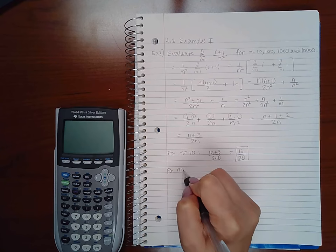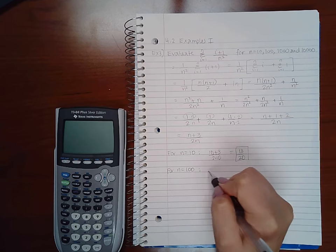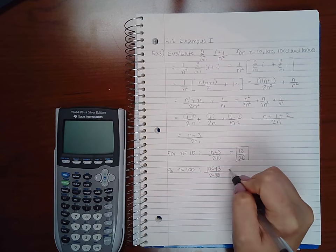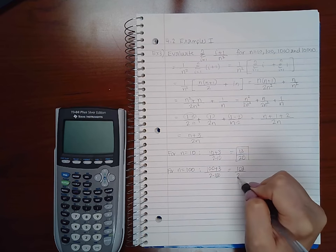For n equal to 100, we get 100 plus 3 over 2 times 100, which is 103 over 200.